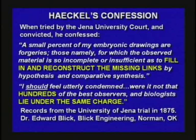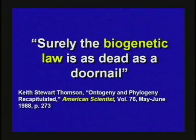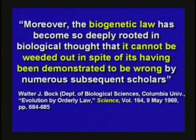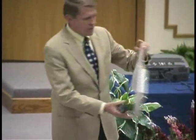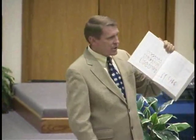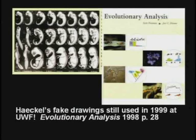This biogenetic law is as dead as a doornail — it's not true. But it can't be taken out of the textbooks for some reason. It's been proven wrong since 1875 and they still keep it in the books. It's still used in the college textbook Evolutionary Analysis, 1998 edition, used at University of West Florida — the exact same chart of Ernst Haeckel. That's only been proven wrong since 1875. I know it takes a while to get textbooks up to date, but 130 years ought to be enough.